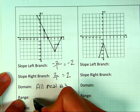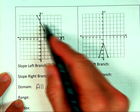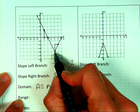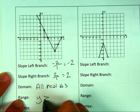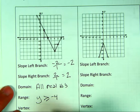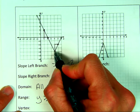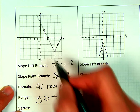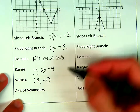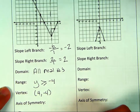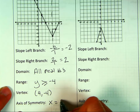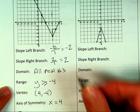The range is all about up and down. My arrows go up forever, but they stop at the bottom — the lowest point is negative four. So y is greater than or equal to negative four, because it starts at negative four and goes up forever. My vertex, the turning point, is at (4, −4). The axis of symmetry is the vertical line through the vertex, so x equals four.